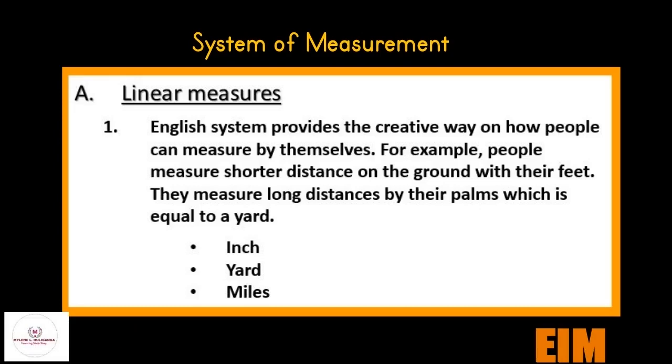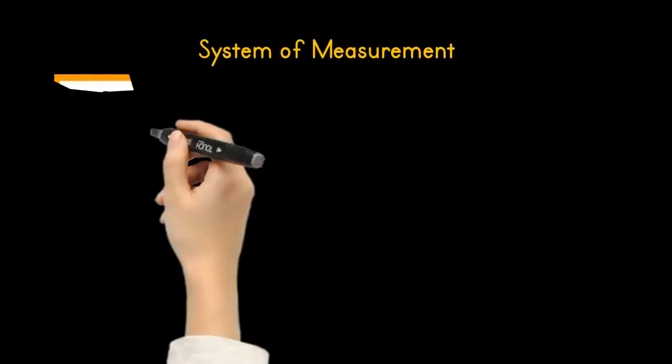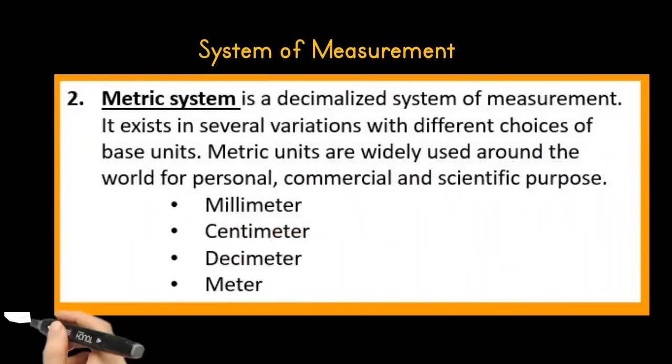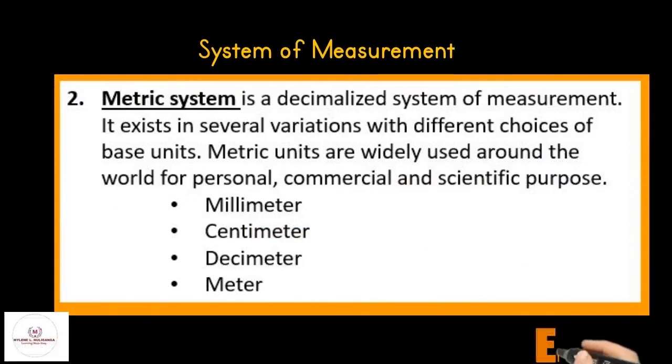Number two is the metric system. The metric system is a decimalized system of measurement. It exists in several variations with different choices of base units. Metric units are widely used around the world for personal, commercial, and scientific purposes. These are the millimeter, centimeter, decimeter, and the meter.